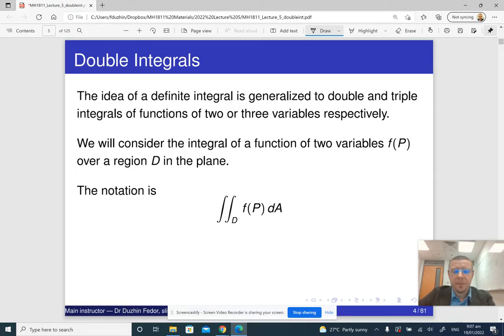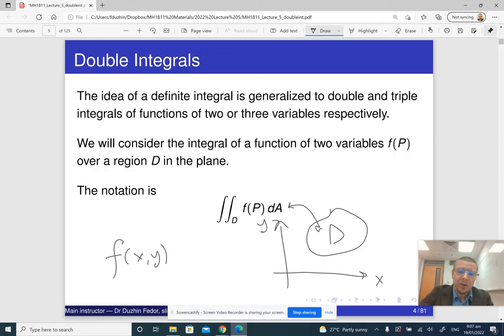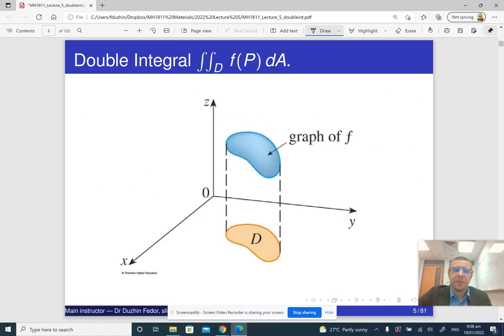Now, the setup here is that if we have a function of two variables, f of x, y, and in the plane x, y, we have some region d, two-dimensional region, then we can compute the integral of our function f of x, y. This is really f of x, y. We can compute the double integral of a function of two variables over an area or over a region in the plane.